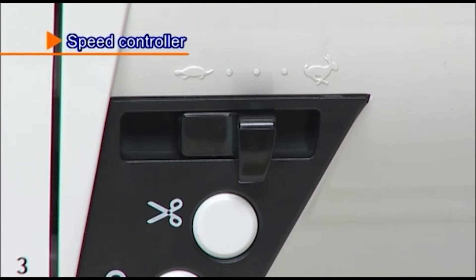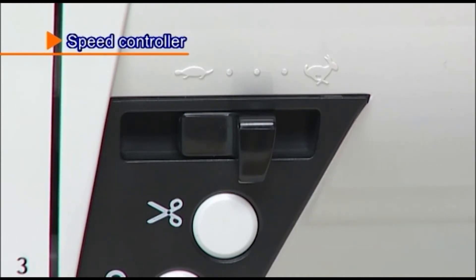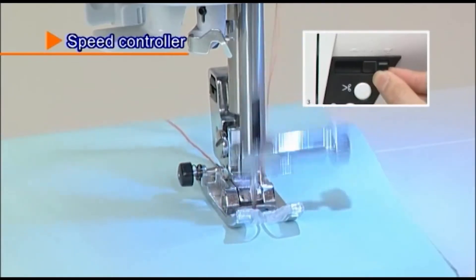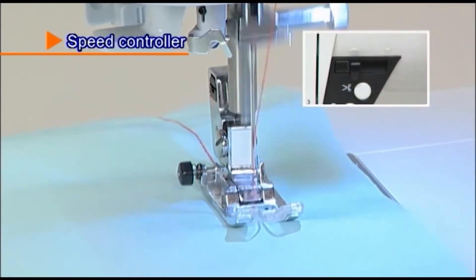While sewing, the speed can be adjusted by sliding the speed controller. Slide the speed controller to the right to sew faster and to the left to sew slower.